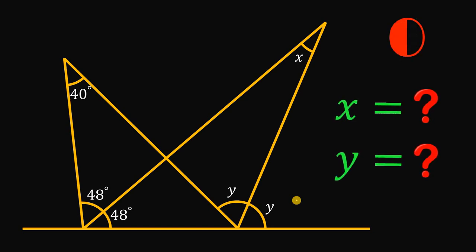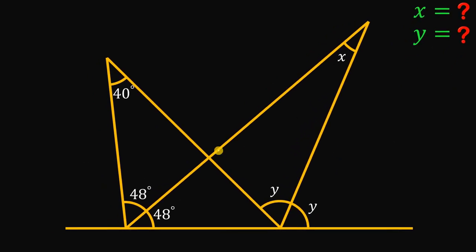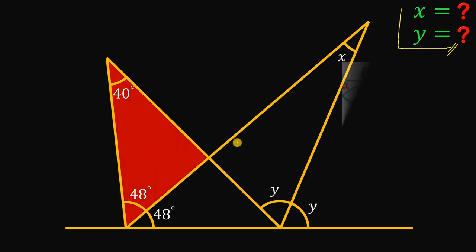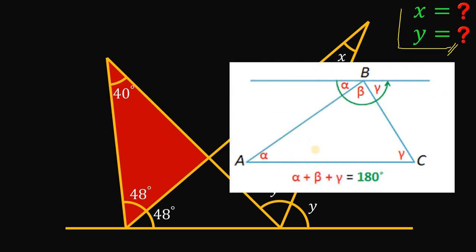Now let's answer this question together. Given this figure, our goal is to solve for the values of angle X and angle Y. To answer this question, we will use some theorems. Let's focus on this triangle. One concept to be used is that the sum of interior angles of any triangle adds up to 180 degrees. We have 40 degrees and 48 degrees, so the total is 88 degrees. The missing angle to make these three angles add up to 180 degrees must be equal to 92 degrees. So this angle right over here must be equal to 92 degrees.